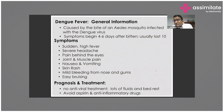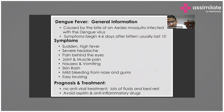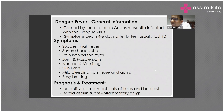Thrombocytopenia in dengue can cause acute gastrointestinal bleed, hemoptysis, and acute intracranial bleeds. The threshold for platelet transfusion as per American Blood Banks is 10,000. Below 10,000 we may need to transfuse if the patient is not bleeding, but if the patient is bleeding, transfuse at whatever the platelet level — 30,000, 40,000, 50,000, or 60,000.